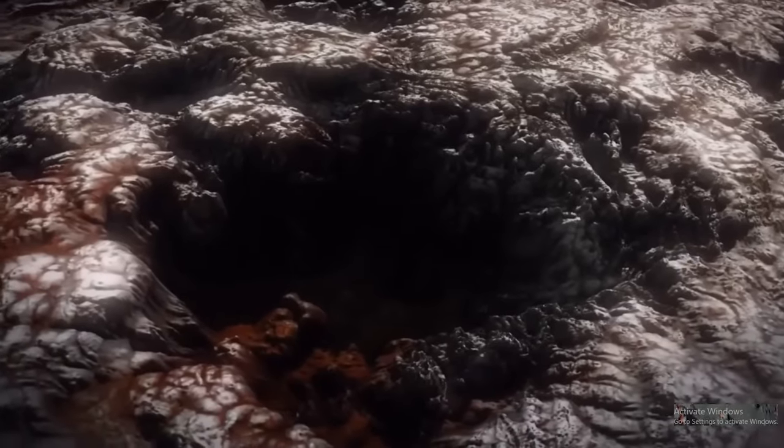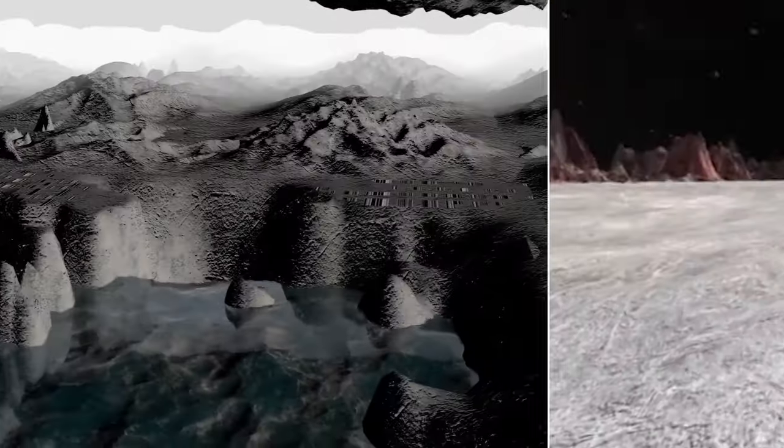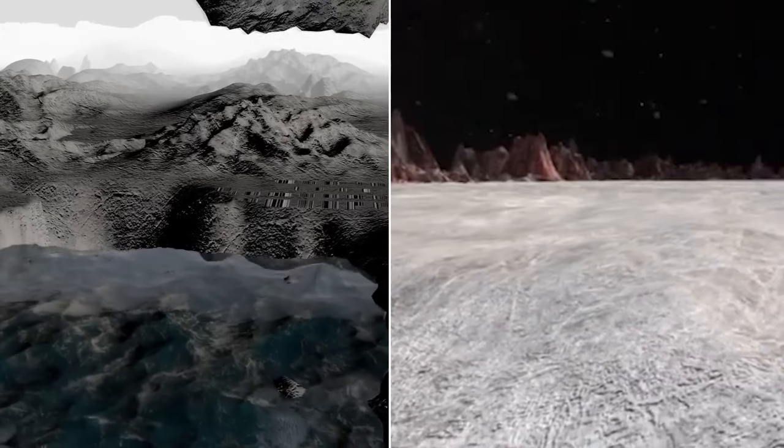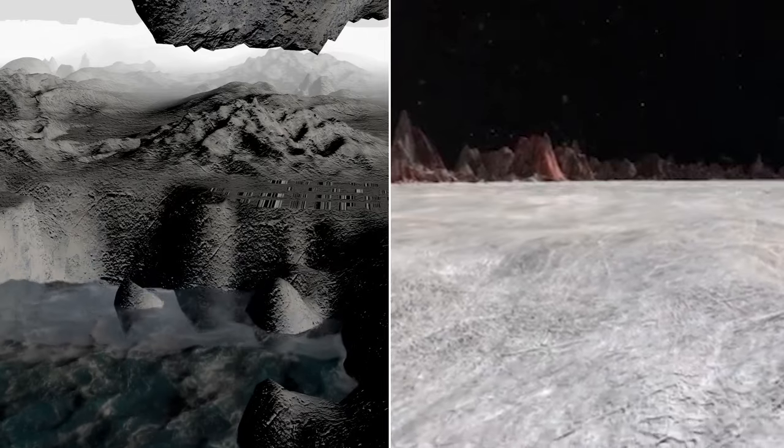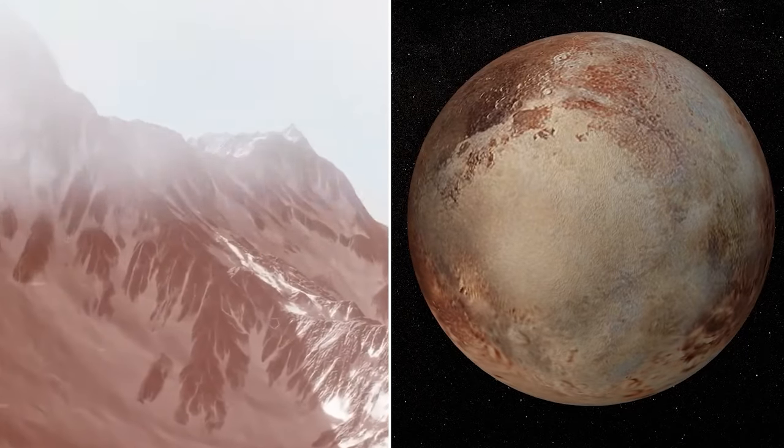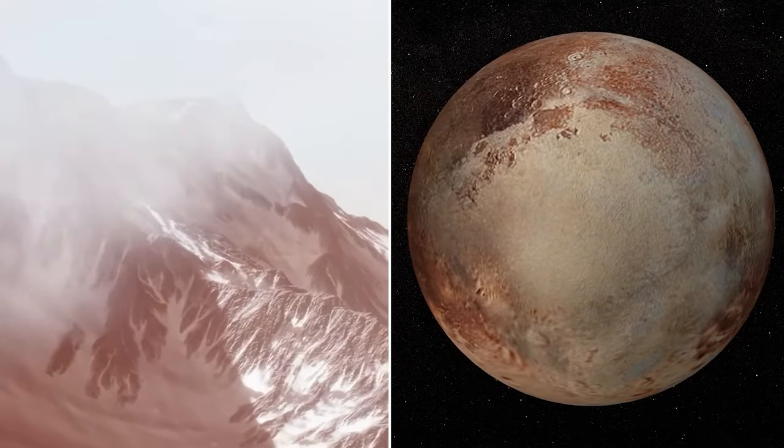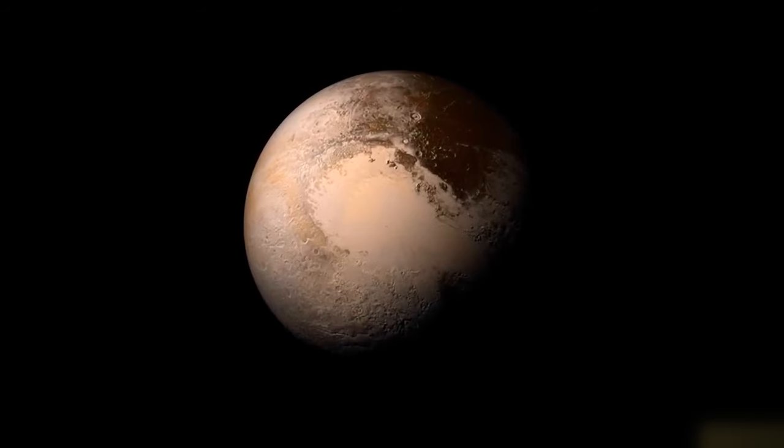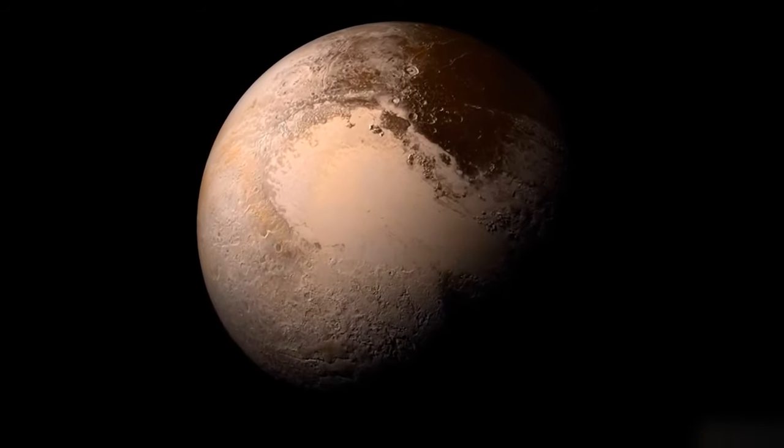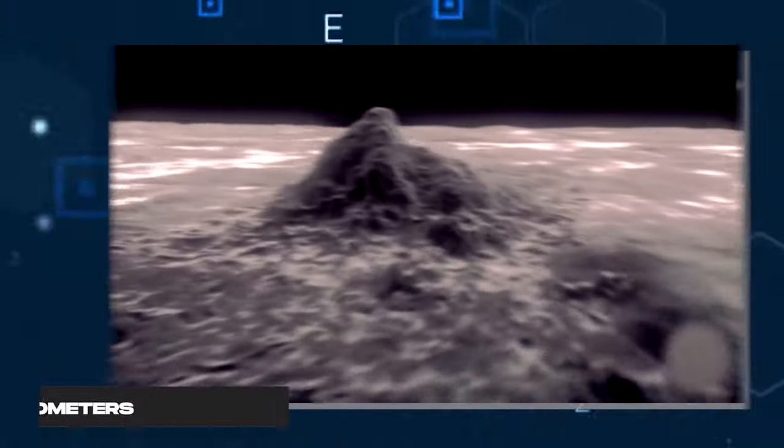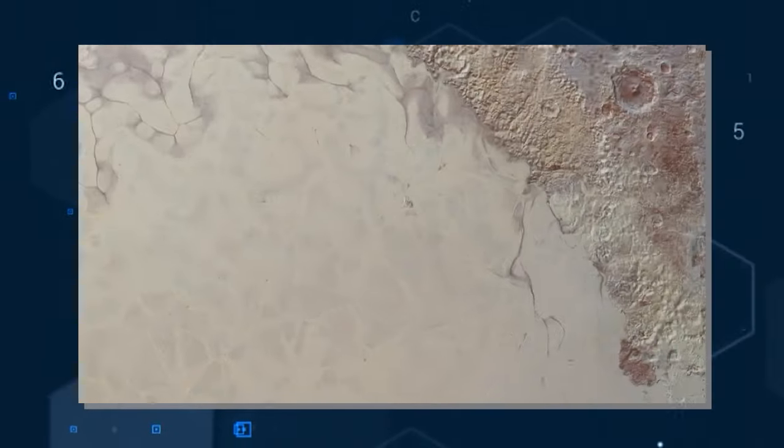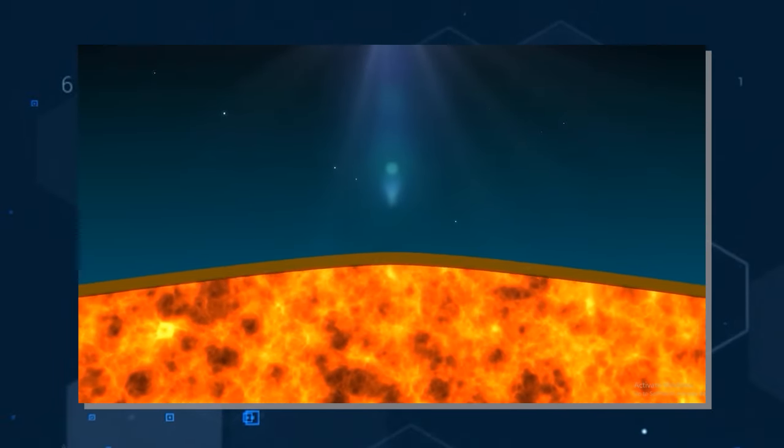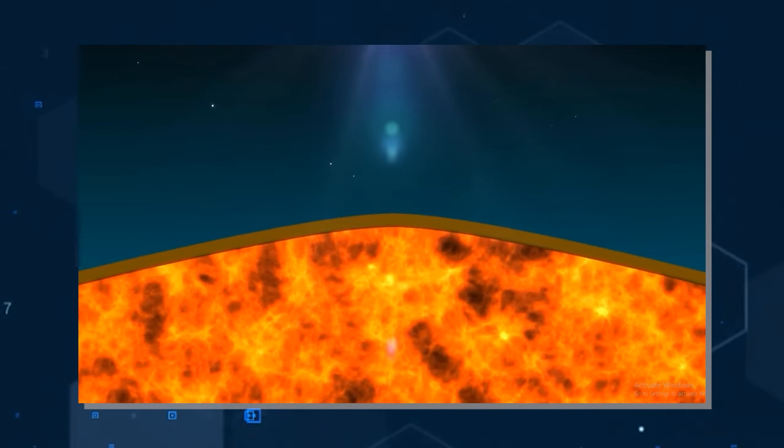This collision birthed a colossal impact crater, subsequently inundated by the contents of Pluto's hypothetical subsurface ocean, which swiftly froze. Several characteristics of the terrain in this area lend credence to this theory. Notably, the presence of numerous smooth surface regions ranging from 20 to 30 kilometers in size, marked by hills and depressions along their borders, resembles convection cells typically found in fluid heated from beneath.